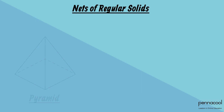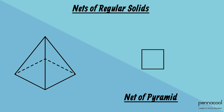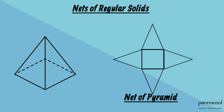Do you think we can draw the net of this pyramid? Well, of course we can. We just need to start with the square base. Then, place each triangular face on each side of the square like this.